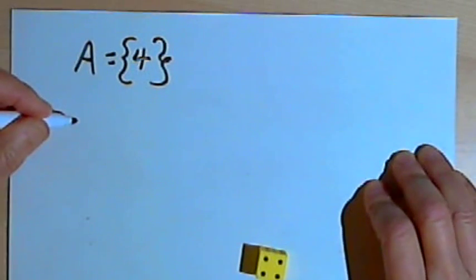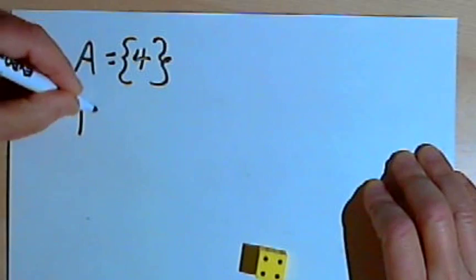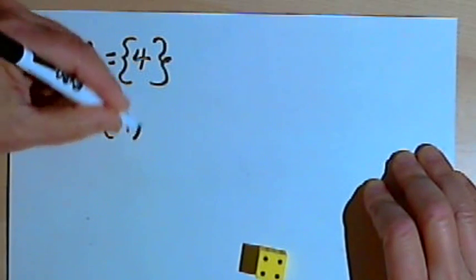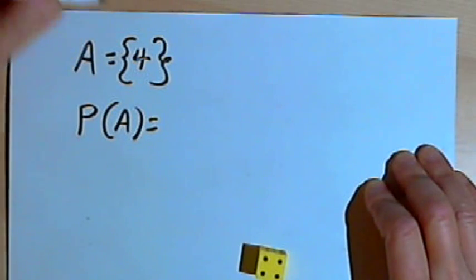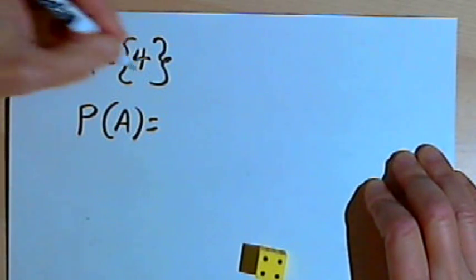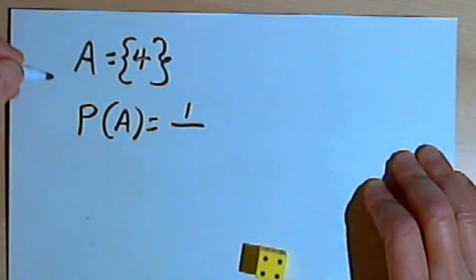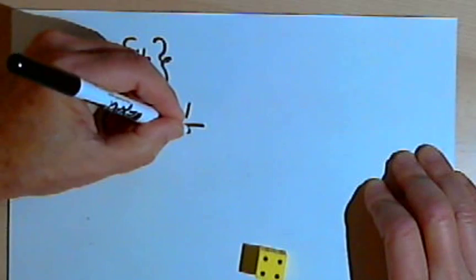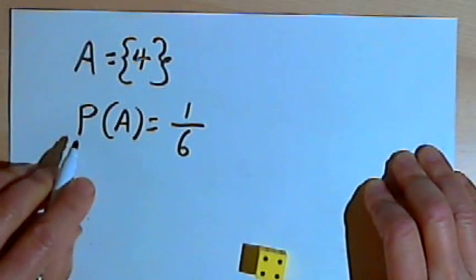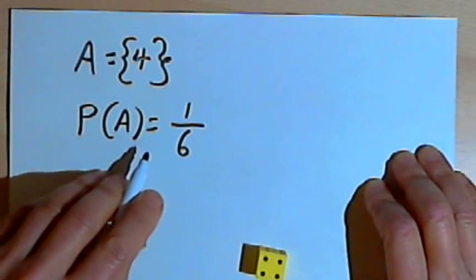Okay, so if we want to figure out the probability of that, the probability of A, what we're going to do is take the number of ways that A could happen, the number of ways I can roll a 4, there's only one way I can do that, and divide that by the total number of possible outcomes, which is 6. So the probability of A is 1 over 6.